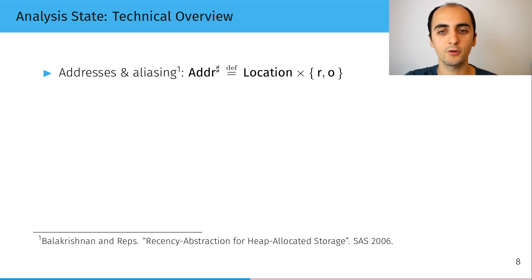And this leads to a short overview of the technical components used in the analysis state. So we use the recency abstraction to abstract the heap into a finite number of addresses. And the addresses are abstracted by a twofold partitioning: the allocation site and the recency criterion. The recency criterion allows to keep the most recent address separated from the others which are summarized and allows to perform strong updates on this one.